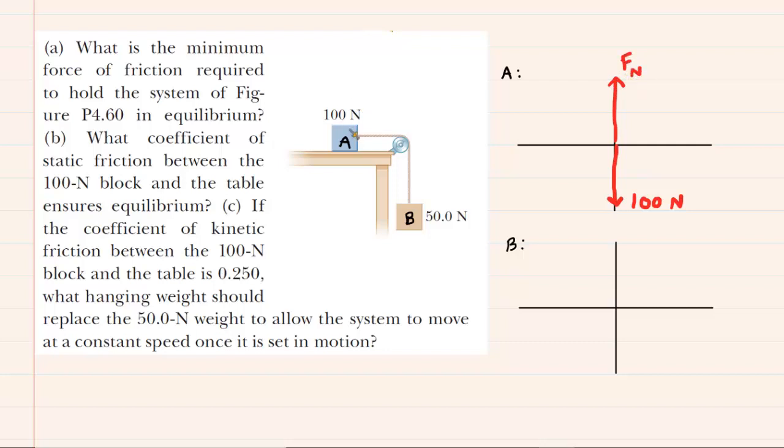And since block A is not accelerating upward or downward, that means that the normal force has to have an equal magnitude to the gravitational force, which is 100 newtons.